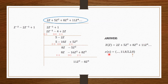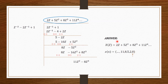Now finding the inverse Z transform X of N: since Z has positive powers, we get negative values of N. Writing the coefficients with the arrow starting at N equals 0: the value at N equals 0 is 0 (no constant term), N equals minus 1 is 2, N equals minus 2 is 5, N equals minus 3 is 8, N equals minus 4 is 11, and so on.